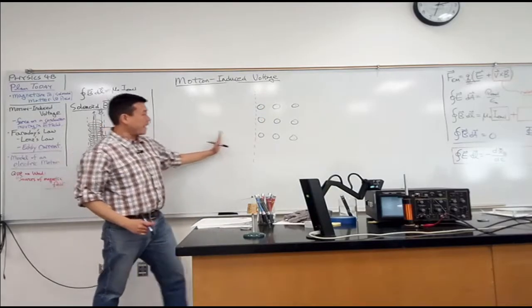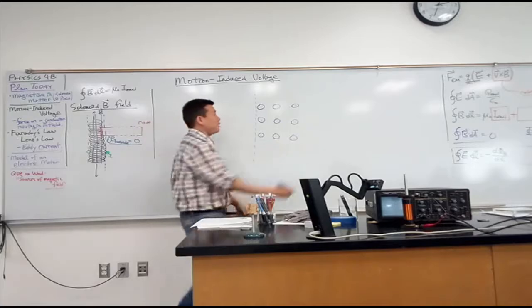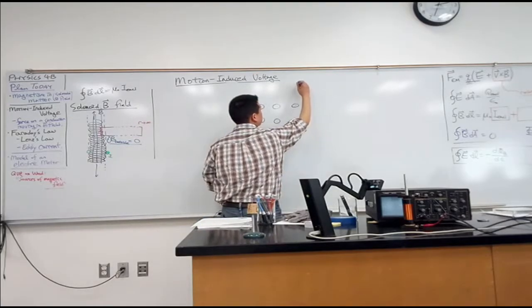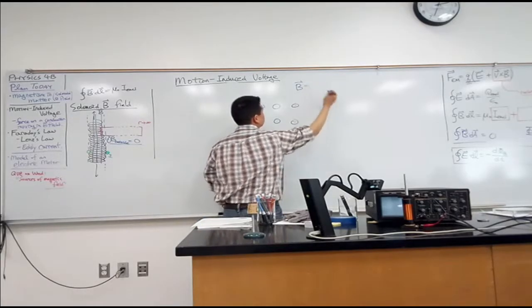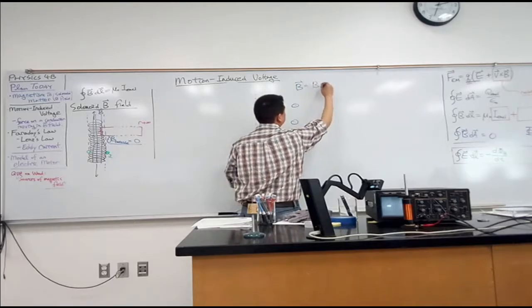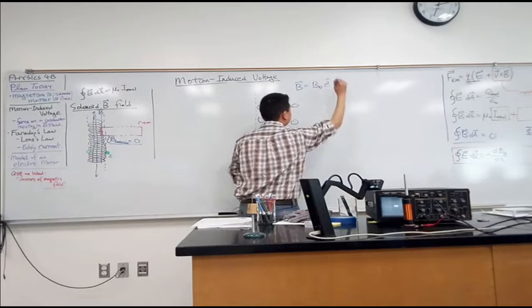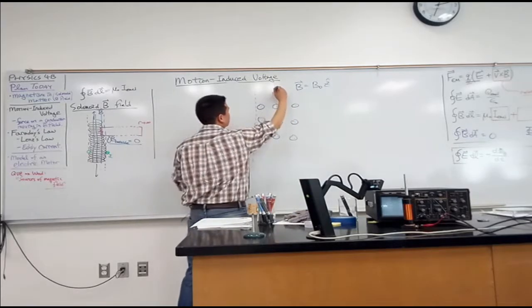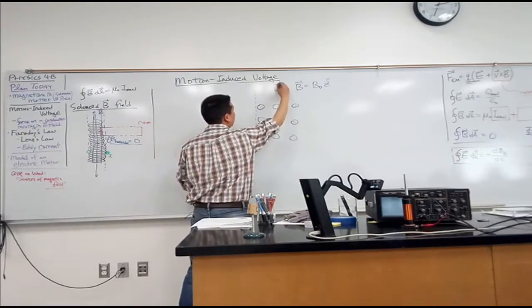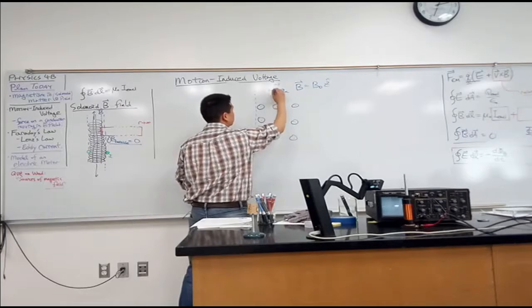So to the right-hand side here, the magnetic field is some constant value. Let me call it B_naught z-hat. So our axis would be X, Y, and Z.